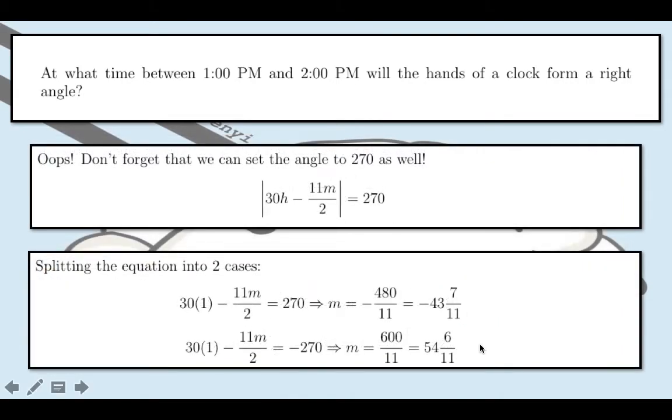Don't forget that we can set the angle to 270 as well. Note that the hands of a clock will always form two angles, the smaller angle and the larger angle. It should be obvious enough that the smaller angle plus the larger angle formed will equal 360. So if the smaller angle is 90, then the other angle, the larger angle, would be 270. So this is the case that we forgot.